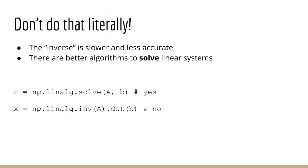Unfortunately, this is not how you should solve this kind of problem in code. As you recall, the inverse uses an algorithm to find its solution. It turns out that this algorithm is both slower and less accurate than it needs to be — for reasons outside the scope of this course. Linear systems can be solved using a different algorithm that is both faster and more accurate. That algorithm is implemented in the np.linalg.solve function.